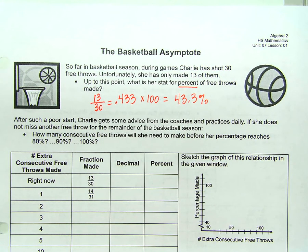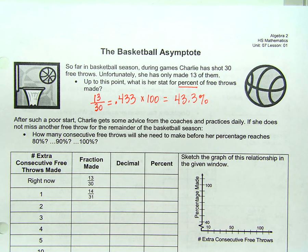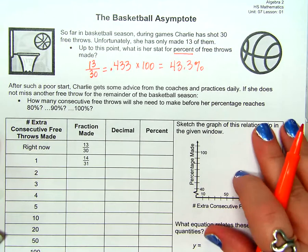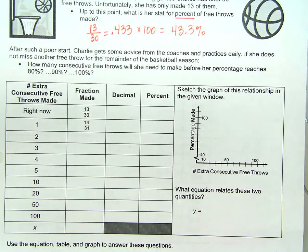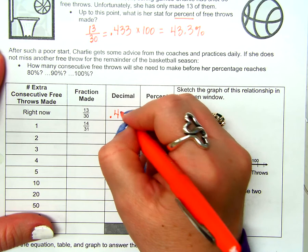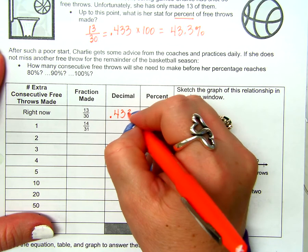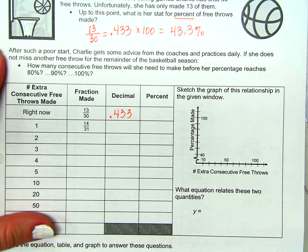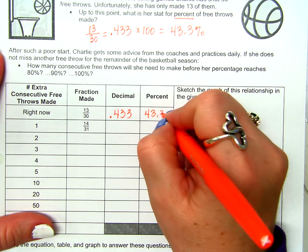After such a poor start, Charlie gets some advice from the coaches and practices daily — which in my opinion she should have been doing the whole time. But what do I know? I'm just an algebra teacher. If she does not miss another free throw for the remainder of the season, how many consecutive free throws will she need to make before her percentage reaches 80%, 90%, or 100%? So let's do some exploration here. We know that right now she's made 13 out of 30, which gives us a decimal of 0.433, or 43.3 percent.